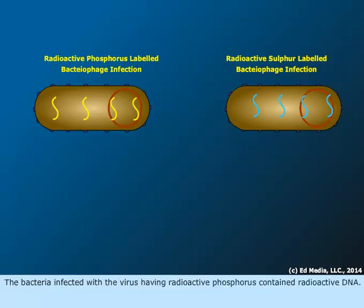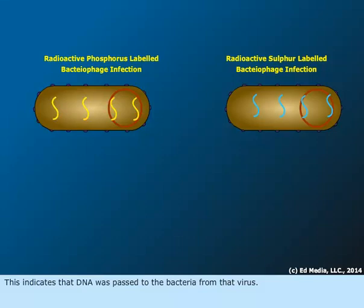The bacteria infected with the virus having radioactive phosphorus contained radioactive DNA. This indicates that DNA was passed to the bacteria from that virus.